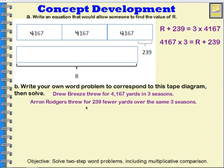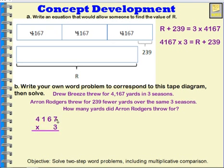Aaron Rodgers threw for 239 fewer yards over the same three seasons. So whatever Drew Brees threw for, which is 4,167 times 3, Aaron Rodgers threw for 239 fewer yards over the same three seasons. So our question would be: how many yards did Aaron Rodgers throw for? This is a two-step problem. First I will need to multiply 4,167 times 3.